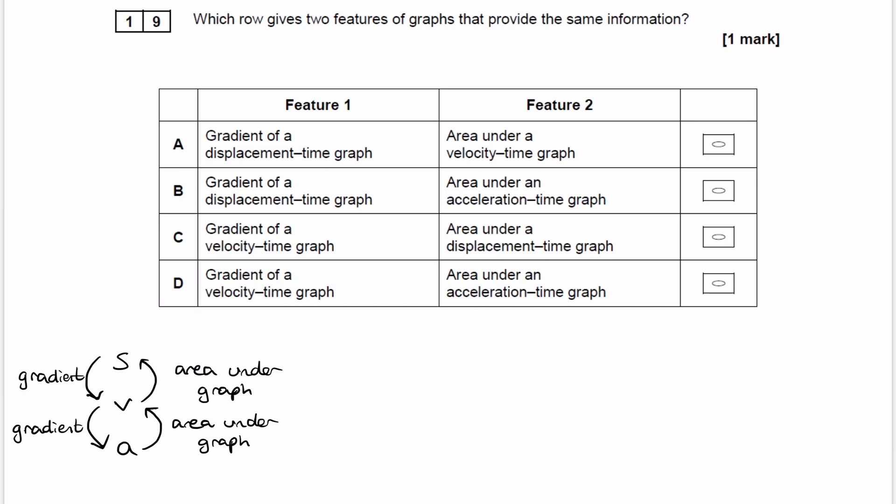Let's break down what each of these features represents. The gradient of a displacement-time graph gives us velocity, and the gradient of a velocity-time graph gives us acceleration.